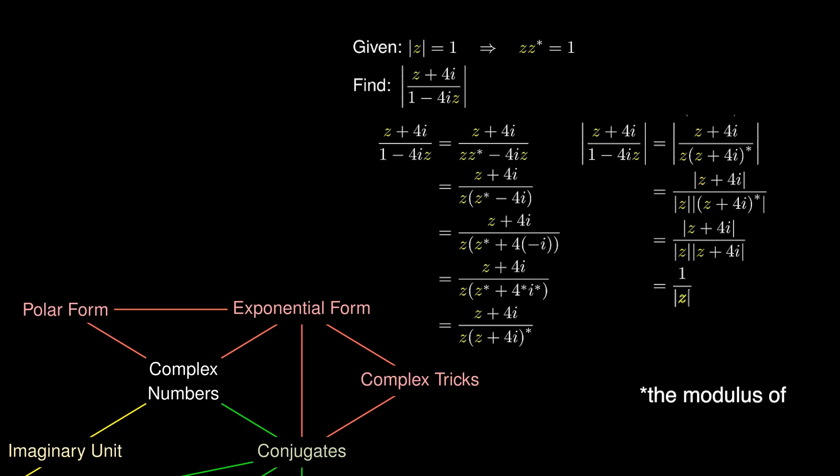Doing a bit of cancellation and using |z| = 1, we simplify to conclude that the modulus of (z + 4i)/(1 - 4iz) equals 1.